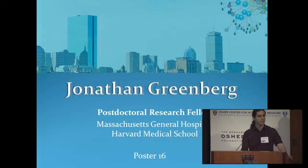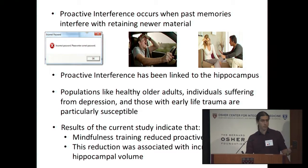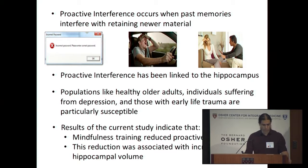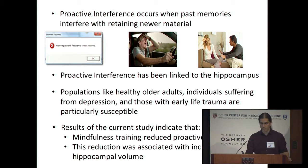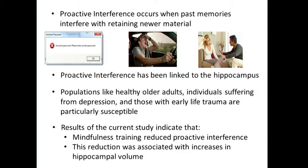Hi, thanks for this opportunity to present. We all at times fail to remember important information. One of the main reasons we forget is called proactive interference—it is when past memories interfere with retaining newer material. It's why we forget to enter our new password after we changed it, why we forget to stop by the supermarket on the way to work, or why we call our spouse by the name of our ex occasionally.